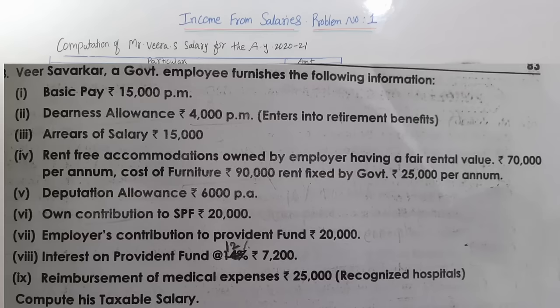Deputation allowance comes under allowances. Own contribution to State Provident Fund (SPF) is totally exempted — whenever you contribute, it is not taxable. Employer's contribution to provident fund — both employee contribution and employer contribution of ₹20,000 are exempted, so we don't consider them while calculating income from salaries. Interest on provident fund at 12% — 12% is allowed and fully exempted, so 7,200 interest on PF is not considered.